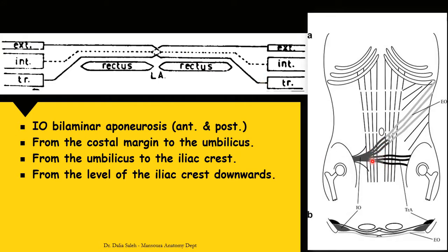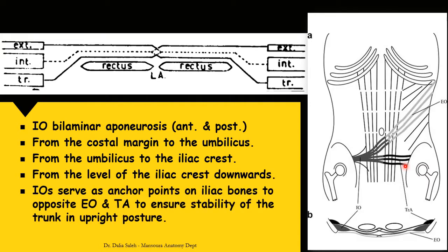The internal oblique splits into two laminae — anterior and posterior. The anterior lamina communicates with the external oblique of the opposite side after crossing the midline, and the posterior lamina communicates with the transversus abdominis of the opposite side. Thus the internal oblique serves as an anchor point on the iliac bone to the opposite external oblique and transversus abdominis, ensuring trunk stability in the upright posture and approximation of the two iliac bones and stabilization of the sacroiliac joint.